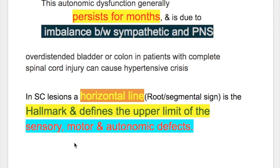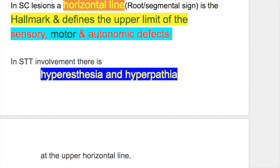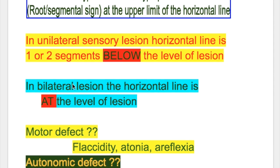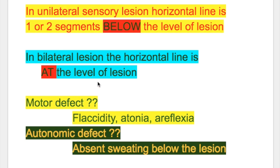The third topic is root segmental signs. In spinal cord lesion, a horizontal line is the hallmark and defines the upper limit of the sensory, motor, and autonomic defect. In spinothalamic tract involvement, there is hyperesthesia and hyperpathia at the upper horizontal line. In unilateral sensory lesions, the horizontal line is one or two segments below the level of lesion. In bilateral lesions, the horizontal line for sensory lesions is at the level of the lesion. The motor defect at the horizontal line is flaccidity, atonia, and areflexia. The autonomic defect is absent sweating below the lesion.